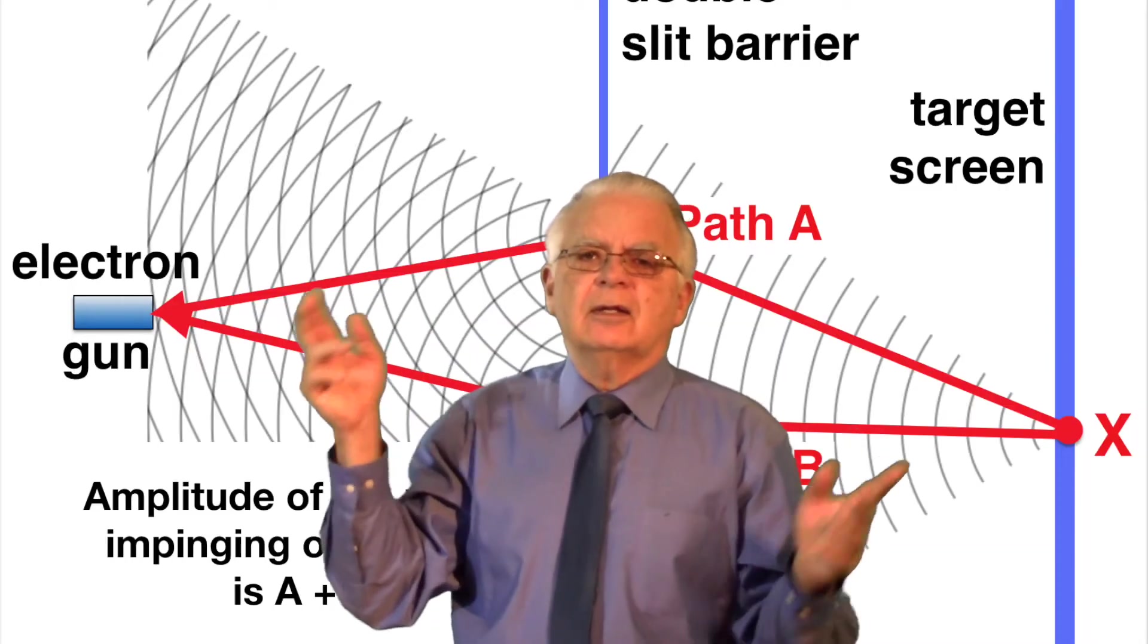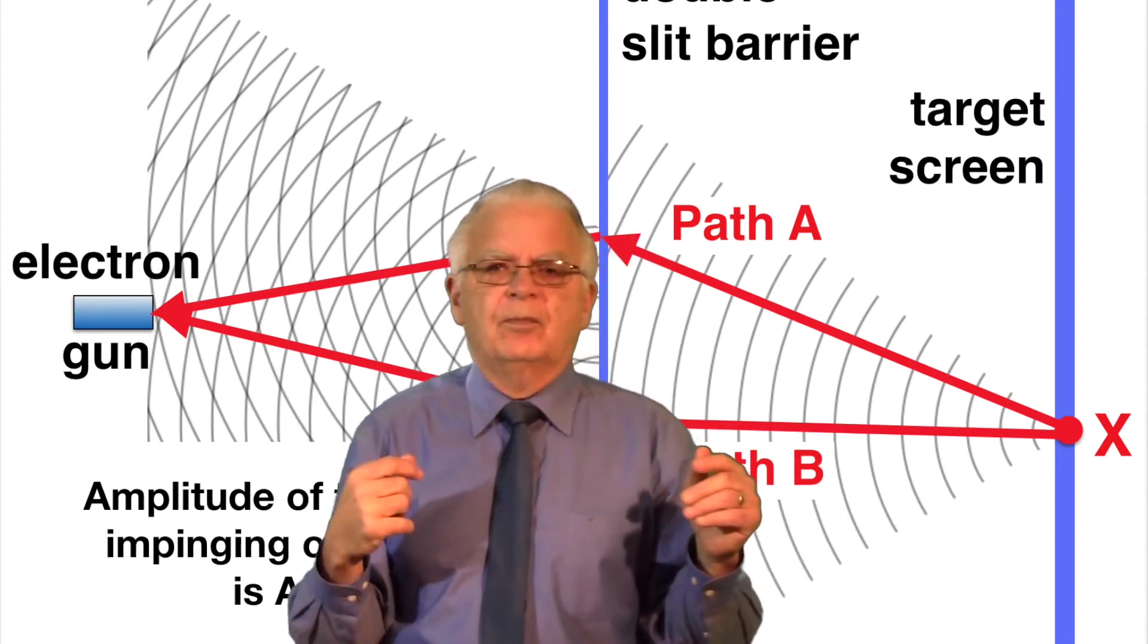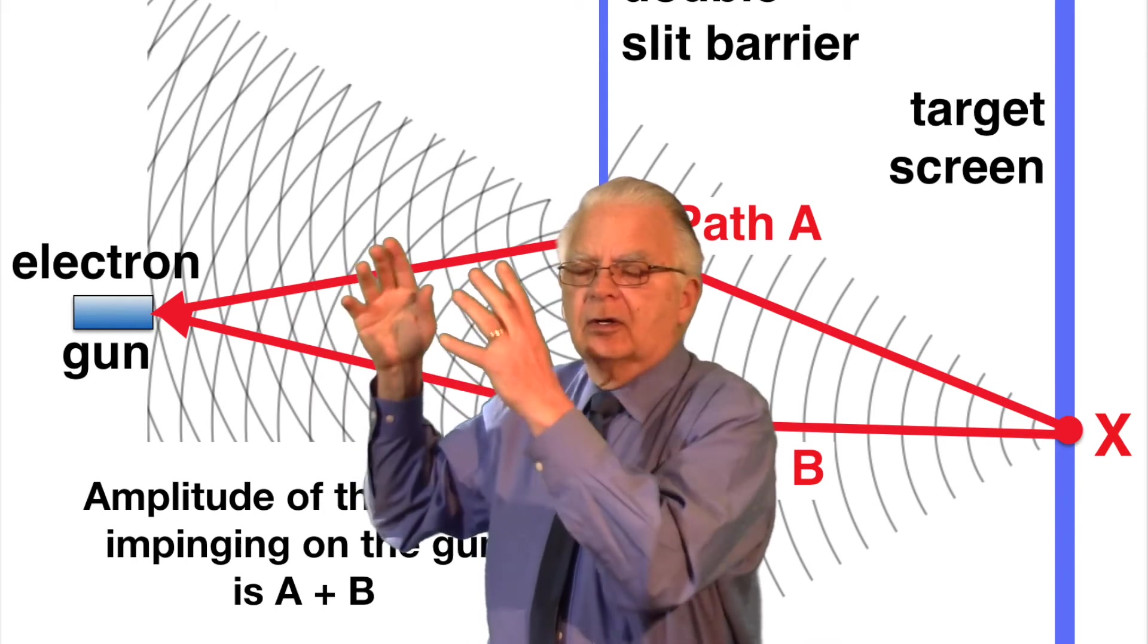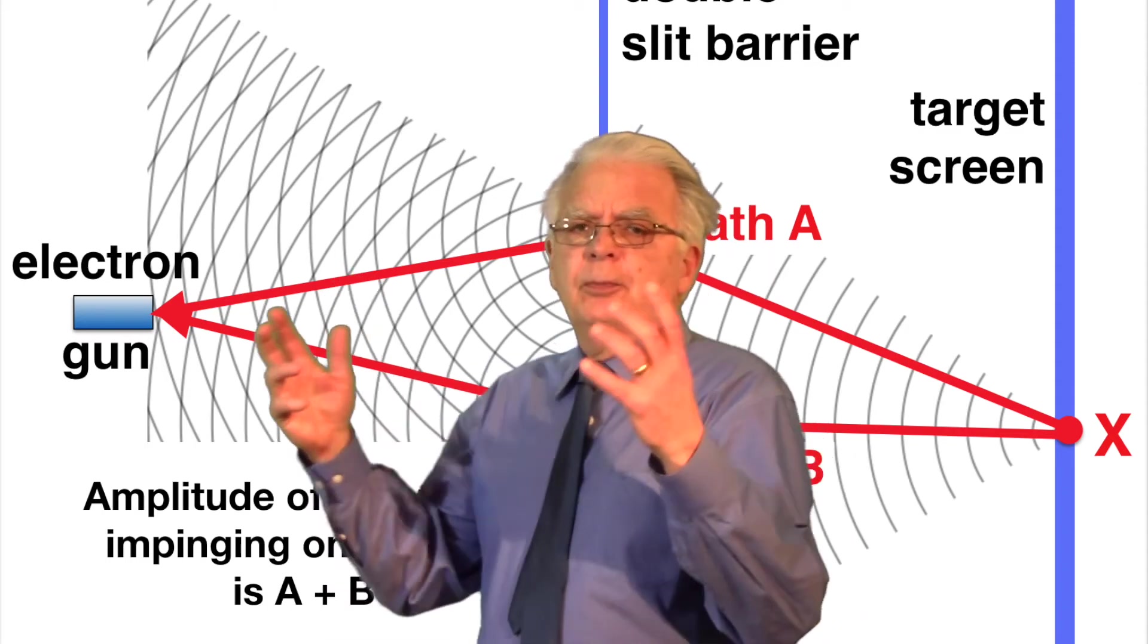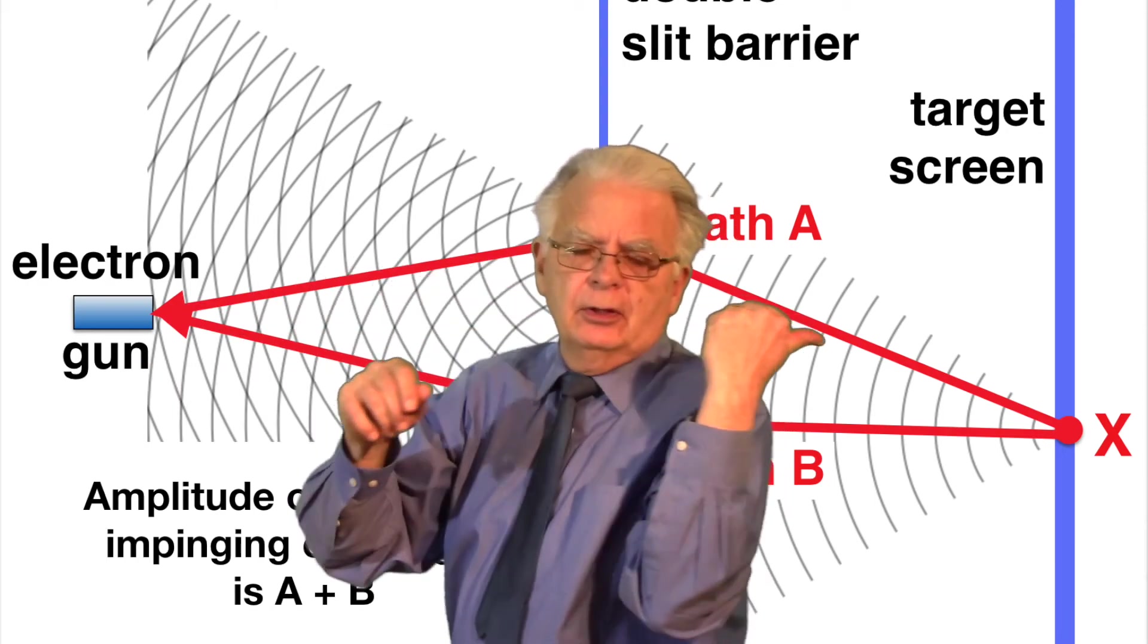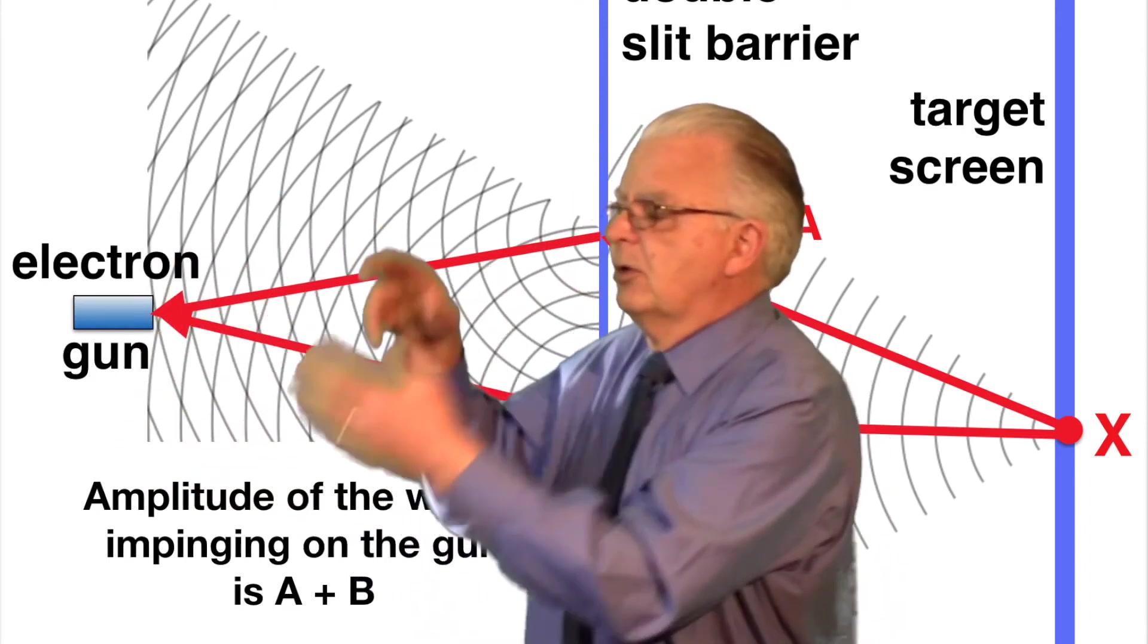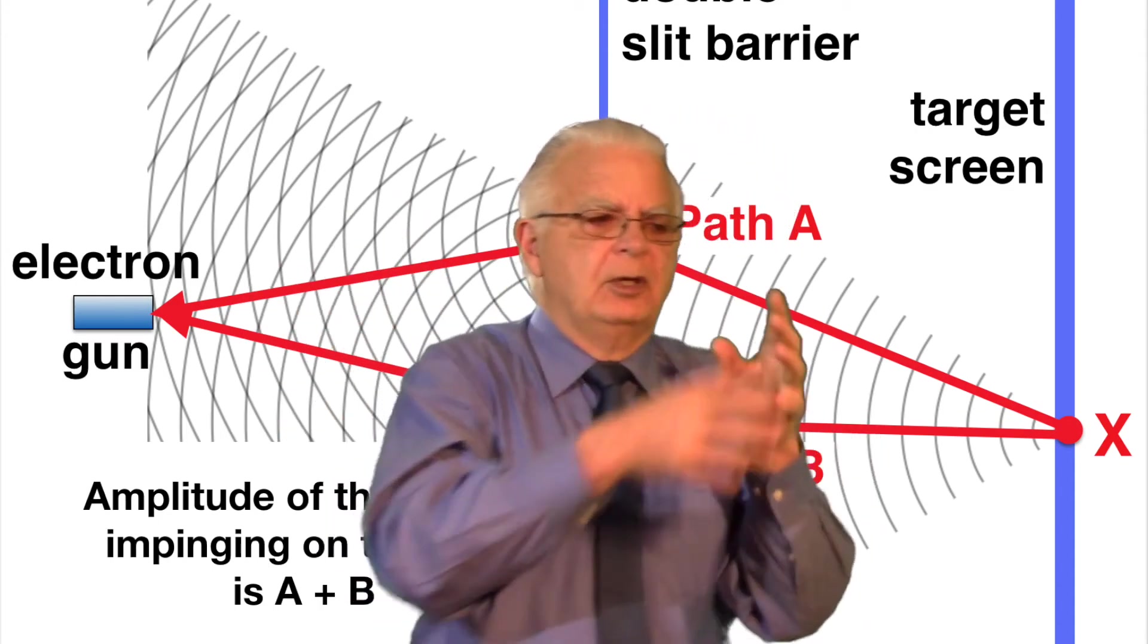In our explanation, the amplitude of the elementary waves impinging on the electron gun is A plus B. These are complex numbers referring to the amplitude of the wave coming through slit A or slit B. To find the probability of an electron being fired, and therefore a dot appearing on the target screen, it is proportional to A plus B squared. And because those are complex numbers that are added and squared, that's where you get all this quantum interference.